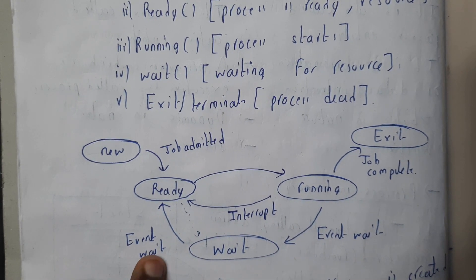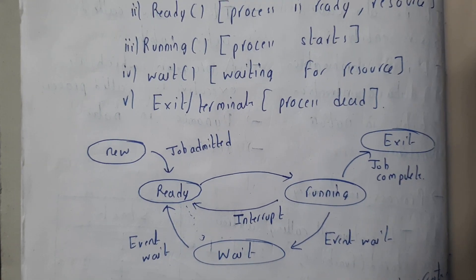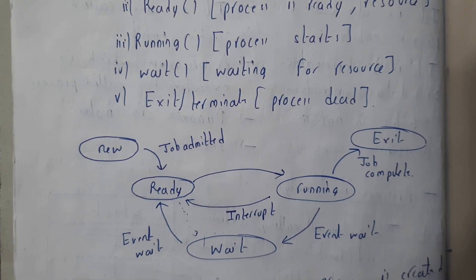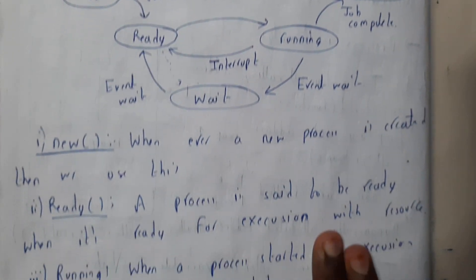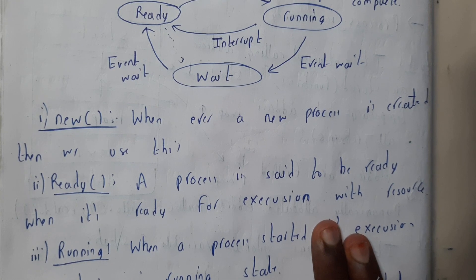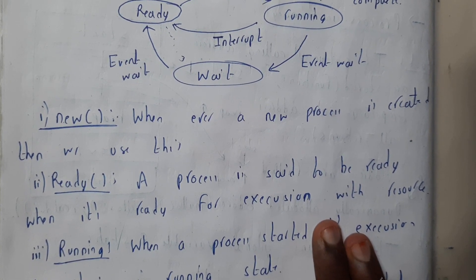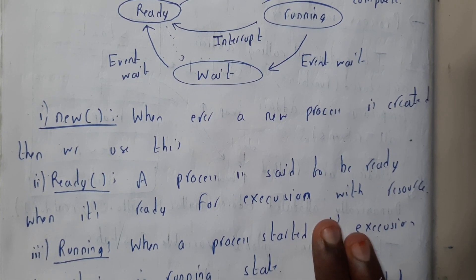In between we'll be having interrupts from running to ready state. This is event wait, and this is also event wait. If a single line description is given for three or four marks, or if it is given for five marks, give a detailed explanation about how it happens, because if it is for five marks you need to elaborate it.